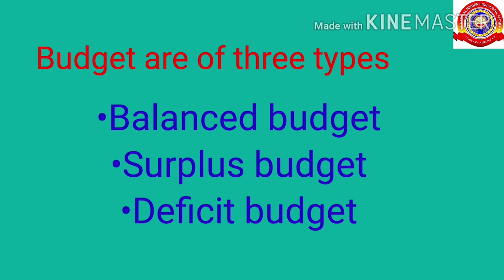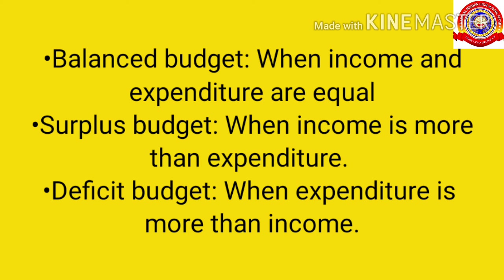Budget are of three types: balanced budget, surplus budget and deficit budget. When income and expenditure are equal, it is called balanced budget. When income is more than expenditure, it is called surplus budget. When expenditure is more than income, it is called deficit budget.